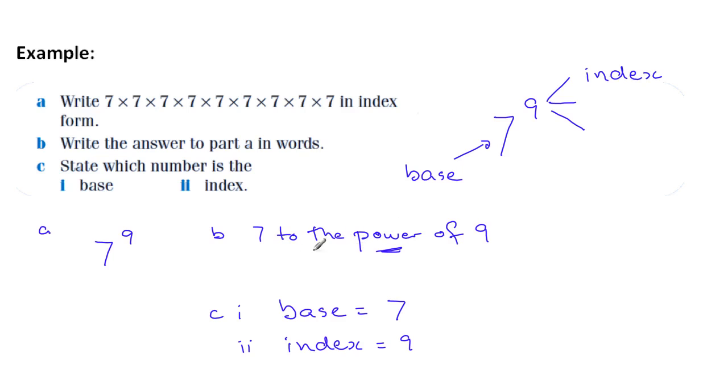From here, letter B, we also know it as the power. So the power of nine, seven to the power of nine. And the third name that you should learn is the name exponent. It's not as common as index and power, but it's used in words such as exponential, which you may come across later.